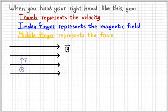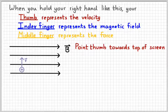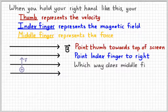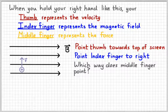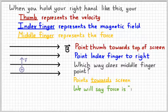Going back to our example, the way we would determine the direction of the magnetic force is: we would point our thumb towards the top of the screen — that's the direction the charge is moving — and we would point our index finger to the right, because that's the direction of the magnetic field. When we do that, we ask ourselves which way does our middle finger end up pointing. There's only one way to hold our hand so the thumb points upwards and the index finger points to the right — your middle finger ends up pointing towards the screen. So the force is into the page.